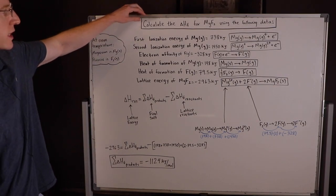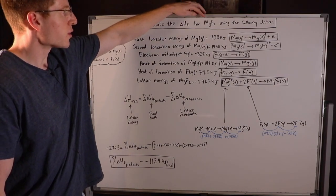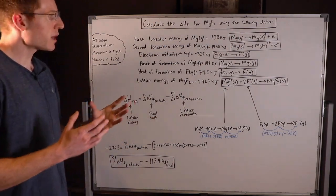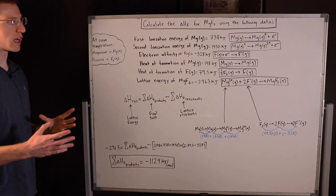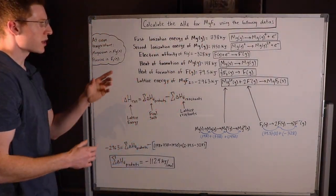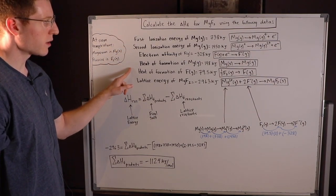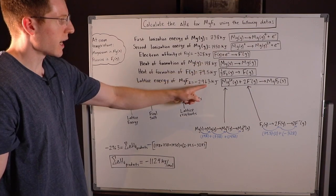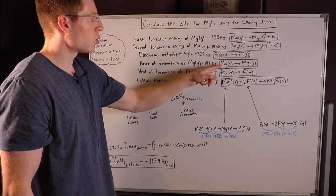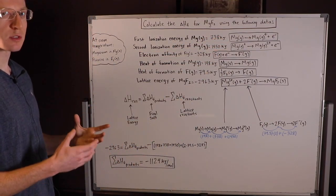I want you to calculate the heat of formation, or the enthalpy of formation, for magnesium fluoride using the following data. Notice how they're not asking for lattice energy this time — they're asking for the heat of formation of the final salt. They give us all of this data, which are all chemical processes associated with certain energies in kilojoules. I found all of these equations boxed up here in black, and I want to show you how I got those.